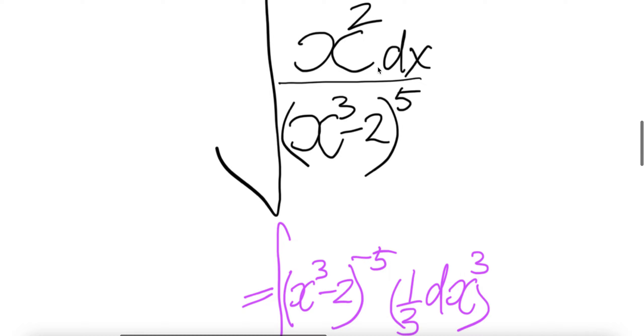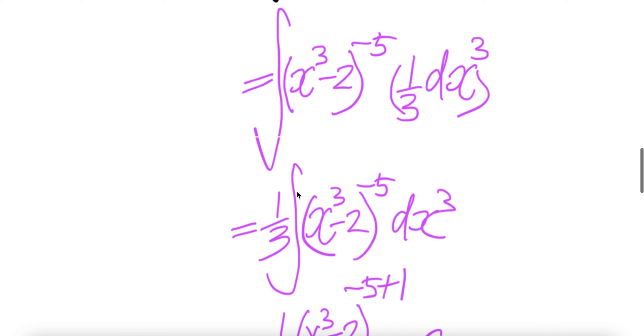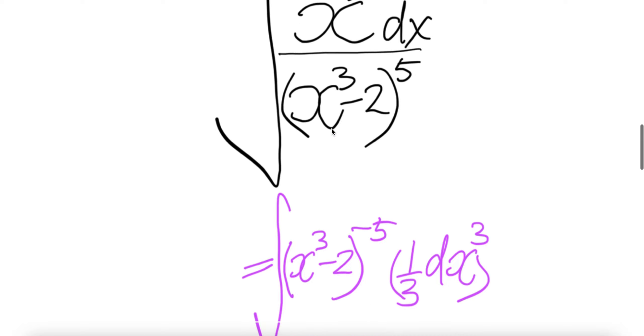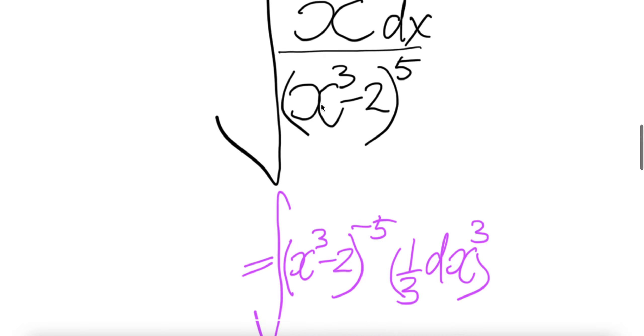Basically this is x² dx. One third out of the integral, and then you have the integral. Before that, let us write this as (x³-2) to the power of negative 5.